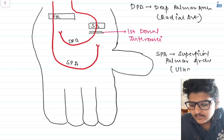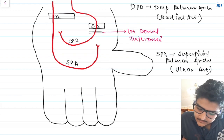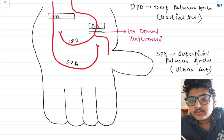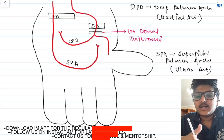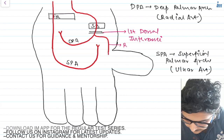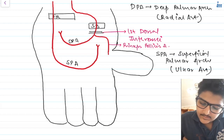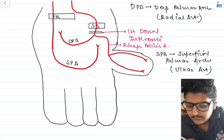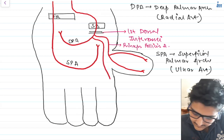The superficial palmar arch is formed by the ulnar artery. Now let's talk about the branches of these arches. Your radial artery gives off a branch to supply your thumb, known as the princeps pollicis artery. As the name suggests, princeps means principal — it is the principal artery supplying your thumb.